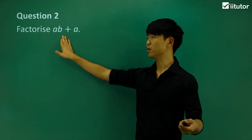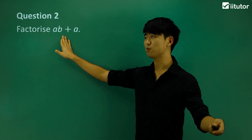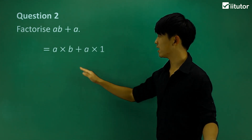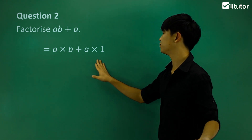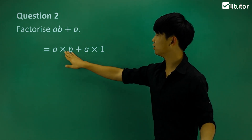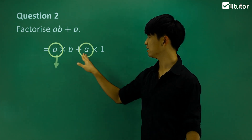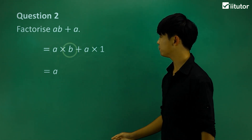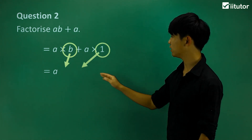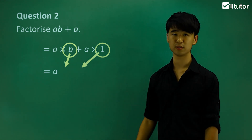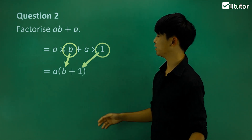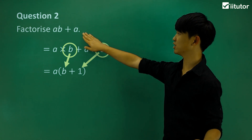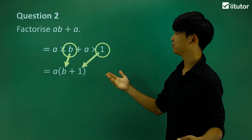Question 2: factorize AB plus A. Writing out all the factors, we can see both terms contain a factor of A, so we take that out. What's left? We're left with B and we're left with 1, with a plus in the middle. So the answer is A bracket B plus 1 bracket. We've essentially just factorized this expression. It's not too hard, but it's very important.